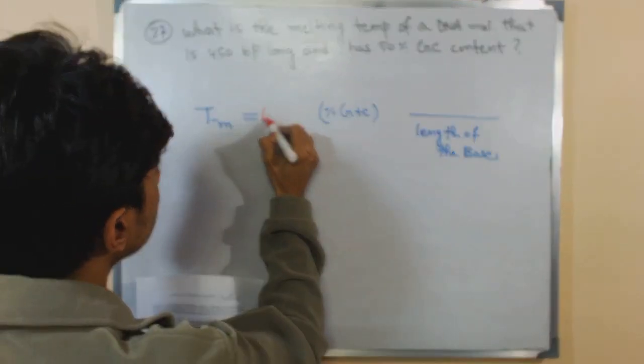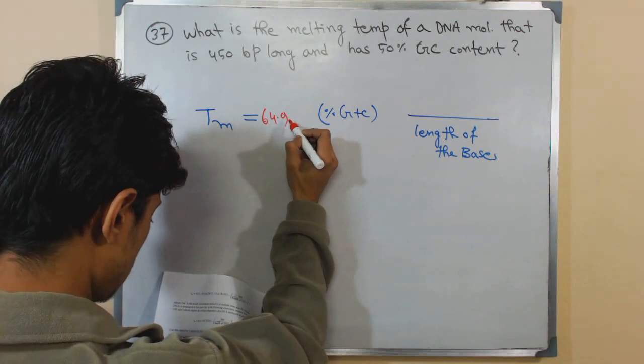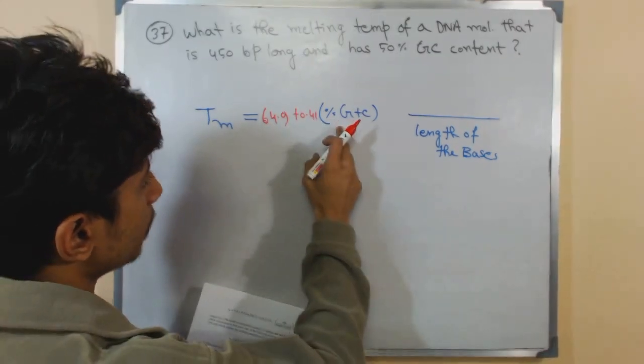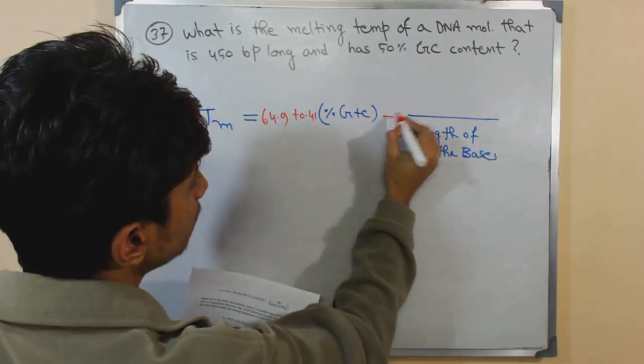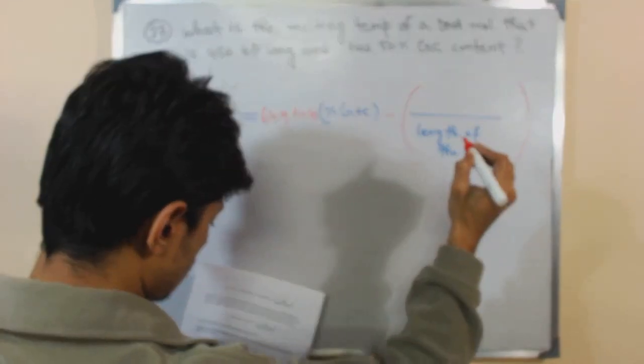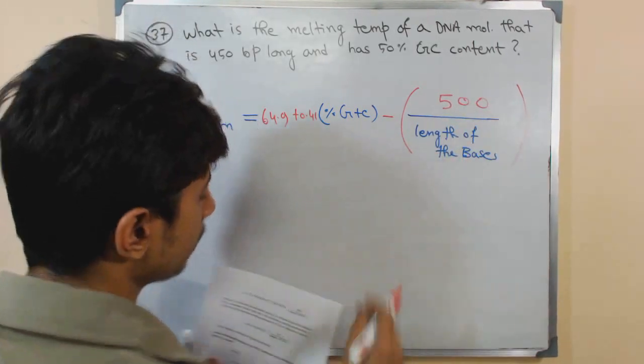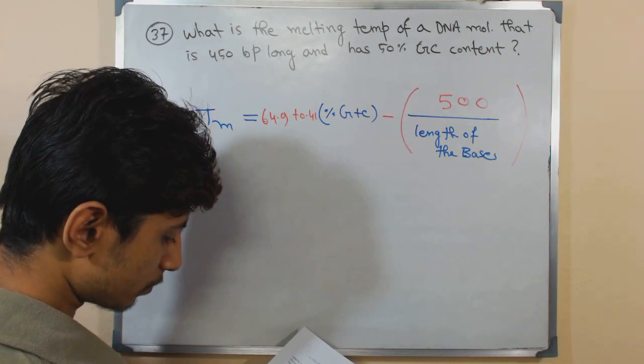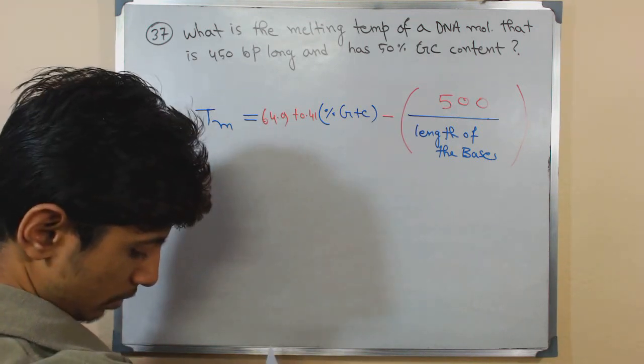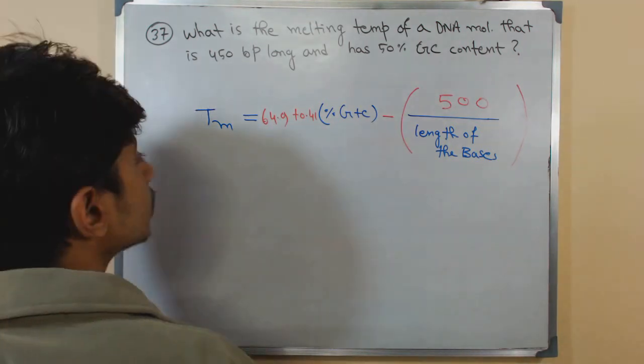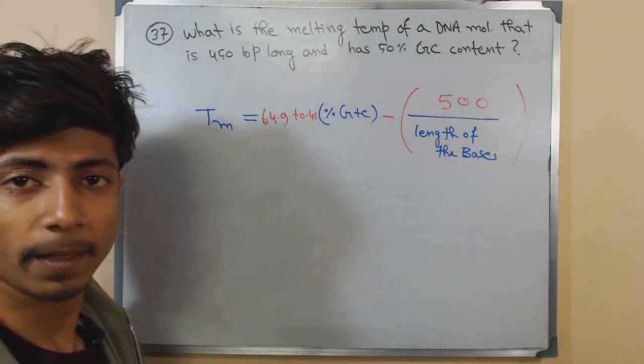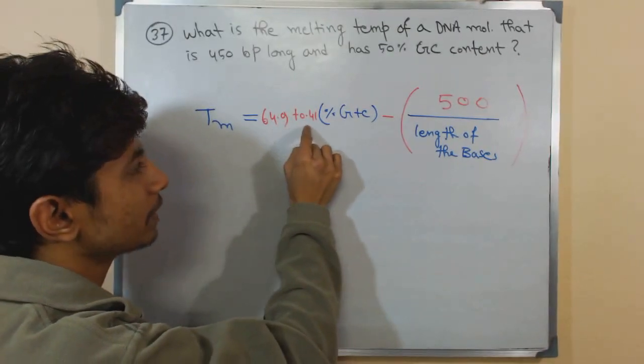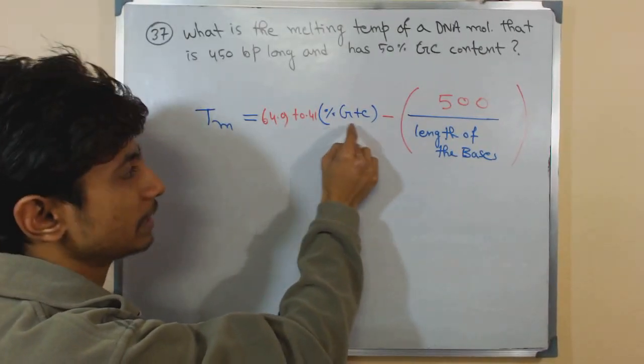The formula is: TM = 64.9 + 0.41 × percentage GC content - 500 / length of the bases. This is the formula for calculating it. TM equals 64.9 plus 0.41 multiplied by percentage GC content minus 500 divided by length of the bases.